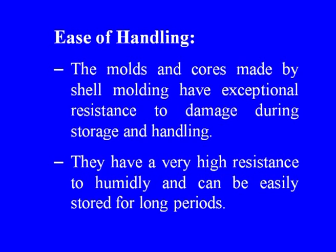The sand-to-metal ratio is a unique advantage of this process, which gives hollow cores and thin-walled molds. The hollow cores improve permeability and act as a passage for evolved gases. This results in substantial weight reduction and material savings. The normal sand-to-metal ratio is 1:1, which is much lower than other processes. The molds and cores made by shell molding also have exceptional resistance to damage during storage and handling.